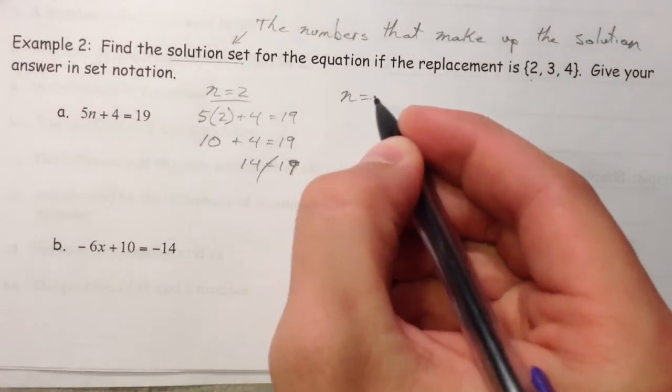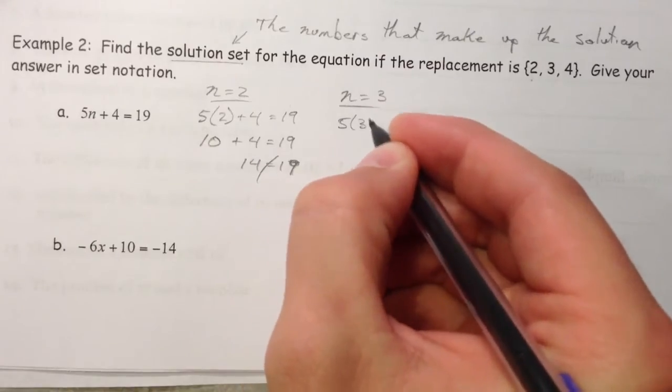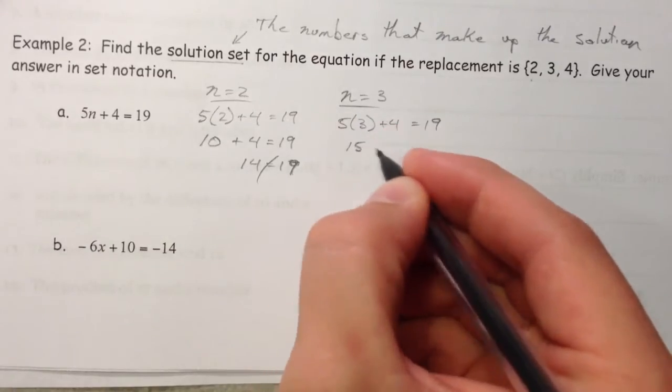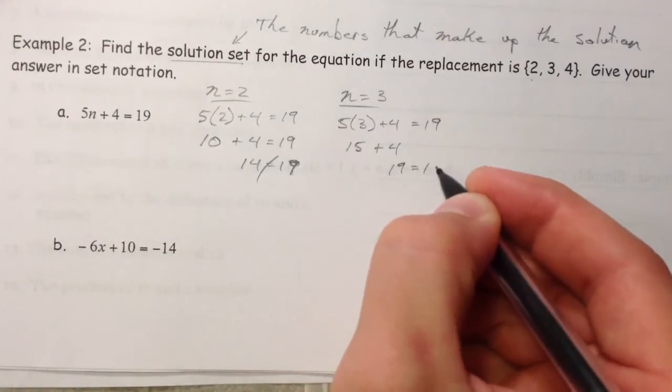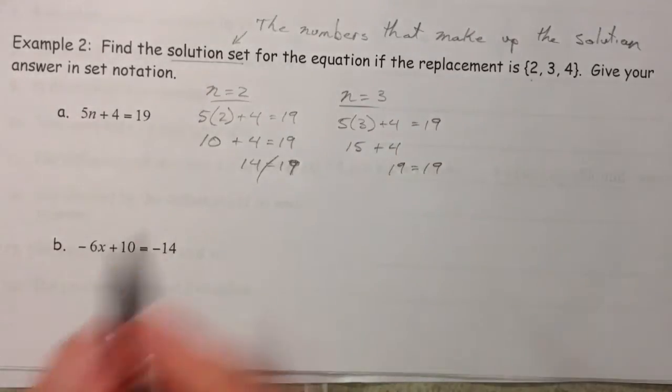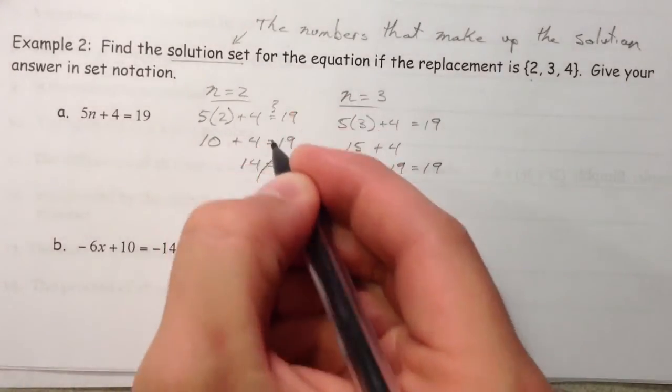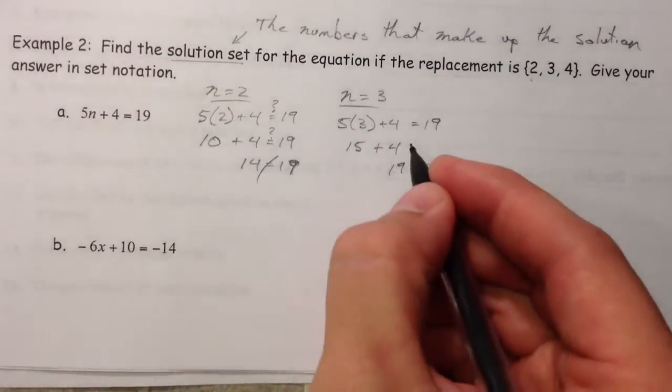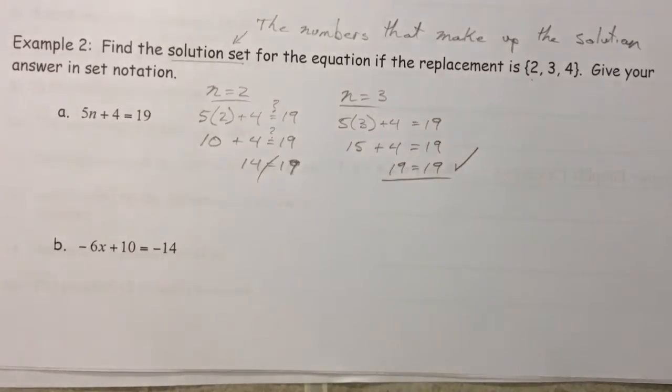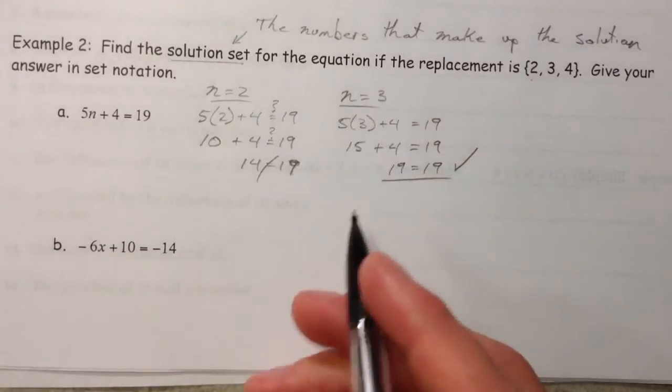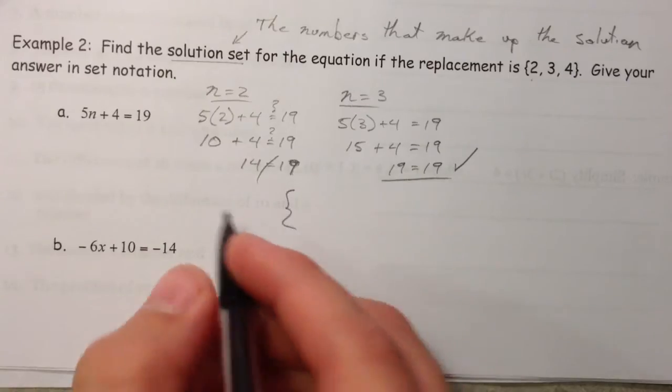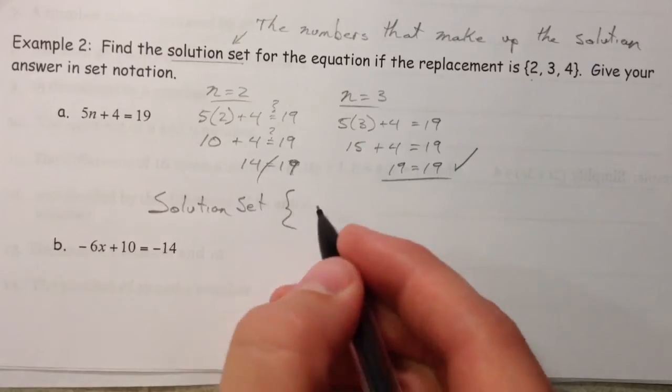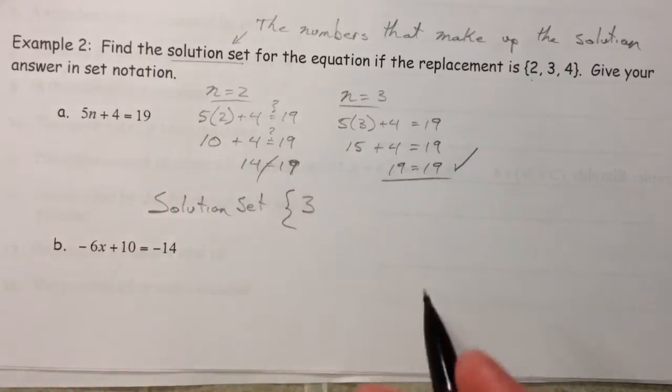What about n equals 3? 5 times 3 plus 4. Got a good feeling about this one because it's 15 plus 4 and you get 19. How about it? Now I've been using equal signs here, and I guess you could put little question marks over it because we don't necessarily know that they're equal, right? We're just testing it out. But here, ding ding ding, it works out. So n equals 3 is a solution. So I'm going to start my solution set and I'm going to put 3 in there. I'm not going to include 2 because it didn't work.